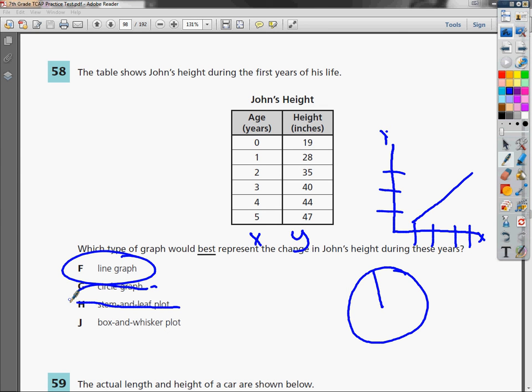And a box-and-whisker plot—I don't know why we'd want to break his heights down and look at the median value of his height and then what's the quartile of his height. That doesn't make any sense.